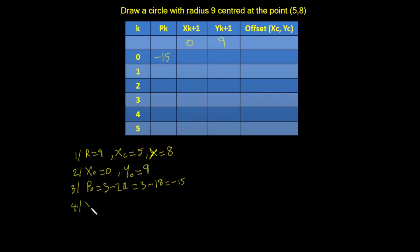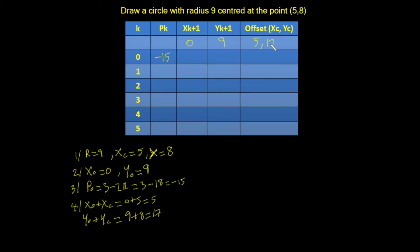Next we work out the offset values. x0 + xc = 0 + 5 = 5, and y0 + yc = 9 + 8 = 17. This column is always the x and y values with the center point offset added — x values plus 5, y values plus 8.